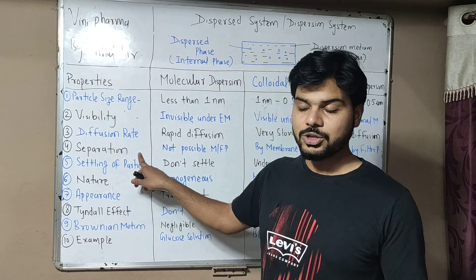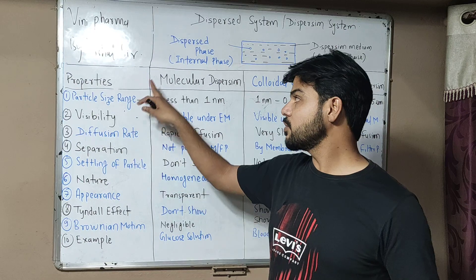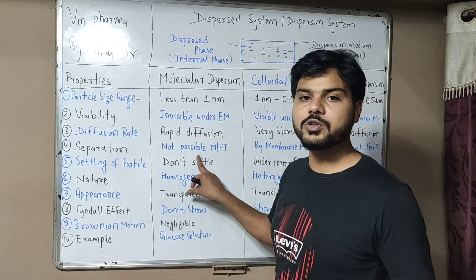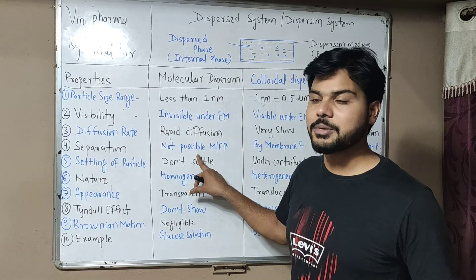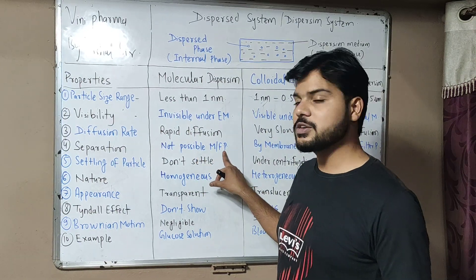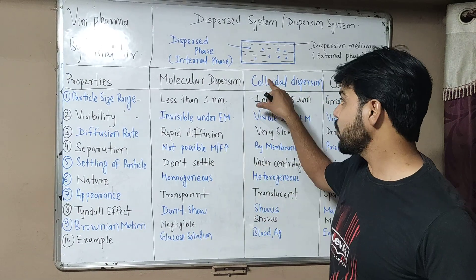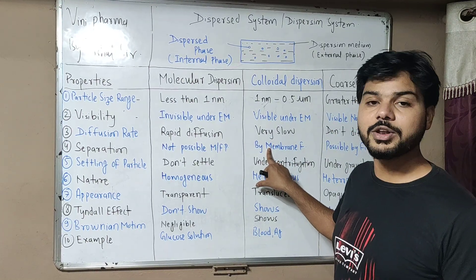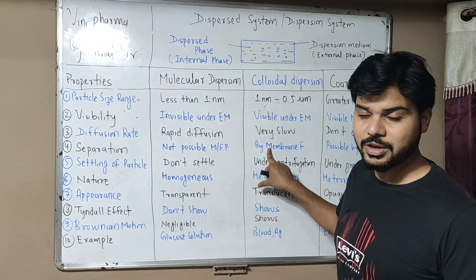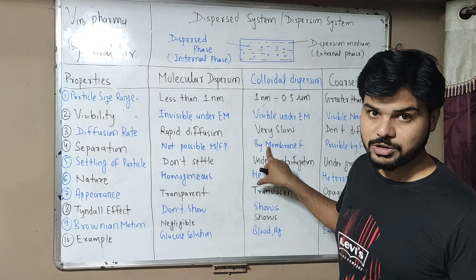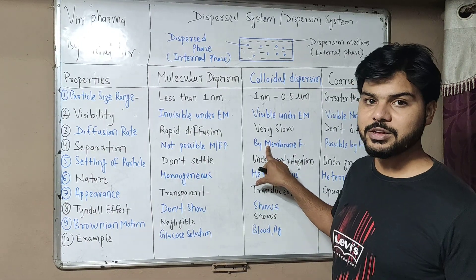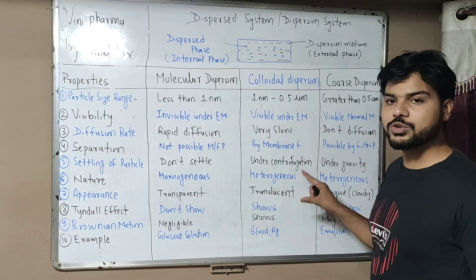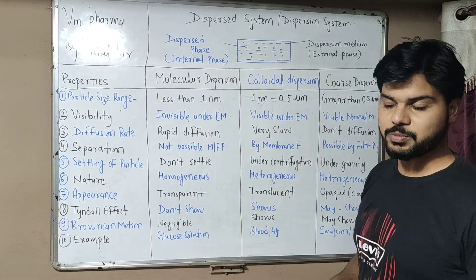For separation: in true dispersion, dissolved particles cannot be separated by a simple membrane filter — they can be separated from simple filter paper. Colloidal particles can be separated through a membrane filter. This is a very important point that may be asked in GPAT.